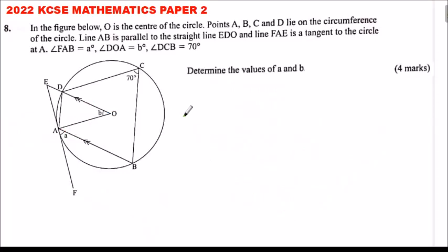2022 KCSE Mathematics Paper 2, Question 8. In the figure below, O is the center of the circle. Points A, B, C, and D lie on the circumference of the circle. Line AB is parallel to EDO, and line FAE is a tangent to the circle at A.